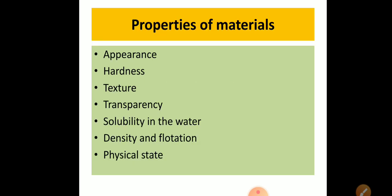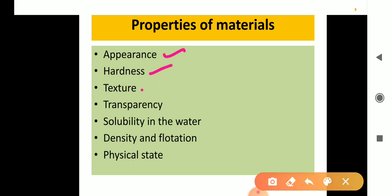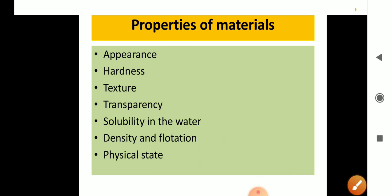Today we will see the properties of material or metal. There are seven properties: the first is appearance, second is hardness, third is texture, fourth is transparency, fifth is solubility in water, sixth is density and flotation, and the seventh is physical state. So there are seven properties in total.